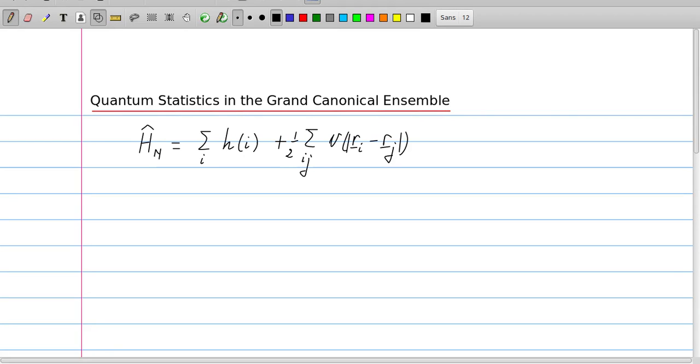What we do have are Hamiltonians for n particles like the one here which first describes particles that do not interact and then there is an interaction term, a potential little v which depends on the distance between ri and rj, so on the separation between particles i and j.